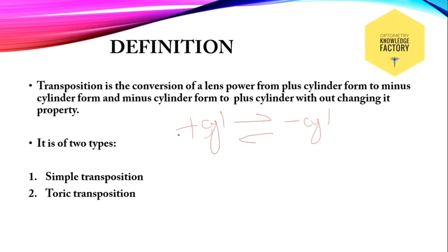There are two types of transposition: simple transposition and toric transposition. In today's lesson, we are only going to learn about simple transposition. We can discuss toric transposition in another session.